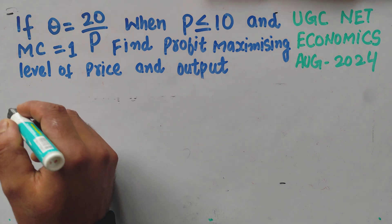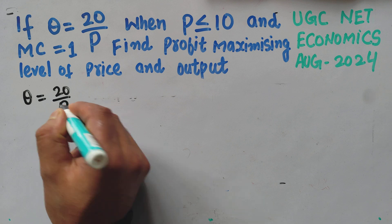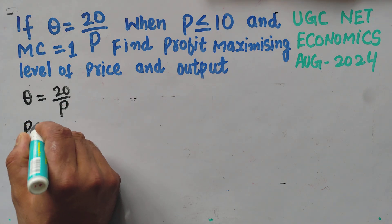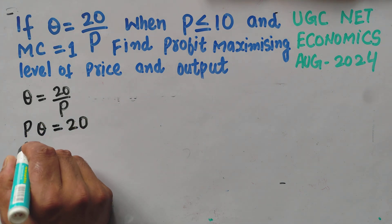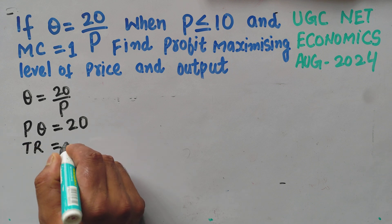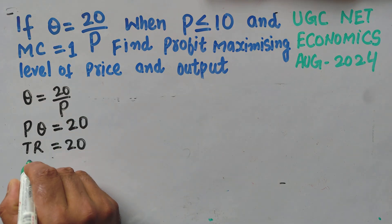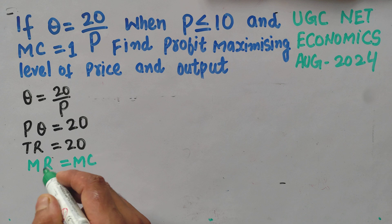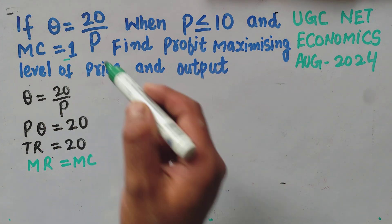We have been given the demand function q = 20/p. If we transpose p, it gets multiplied, so p × q = 20. We know that price into output is total revenue, so total revenue = 20. The profit-maximizing condition requires we equate marginal revenue with marginal cost. Marginal cost is given as 1.